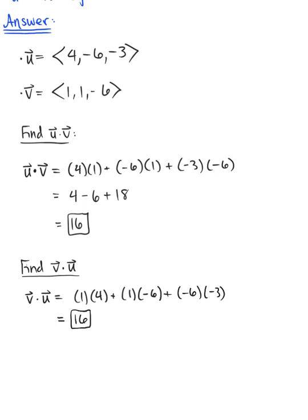So this was nice. This helps us to establish the first property of the dot product, which says that vector u dot vector v is the same thing as vector v dot vector u. We end up with the same scalar value result regardless of the order.